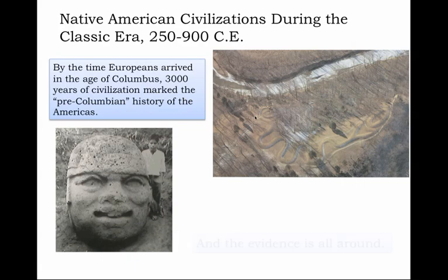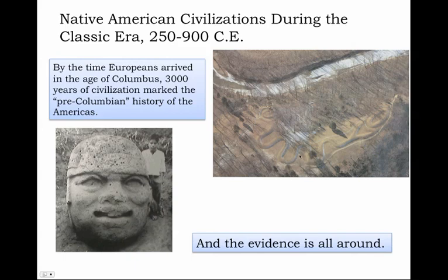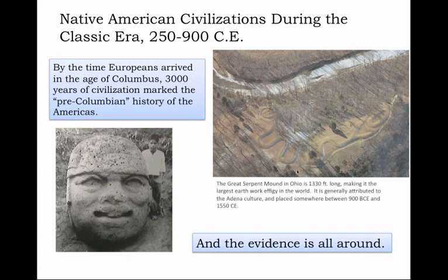The evidence is all around us. From the great earthworks of the Mississippi Basin, such as the famous Serpent Mound of modern Ohio — from tip to tail, the great serpent stretches about 1,330 feet, its jaws opened apparently about ready to swallow what looks like an oval egg. The largest earthen work effigy in the world. It's thought to have been created by the people we know as the Adena, somewhere between 900 BCE and 1550 CE — a broad stretch of time that saw the Adena peoples and their civilization flourish in North America.